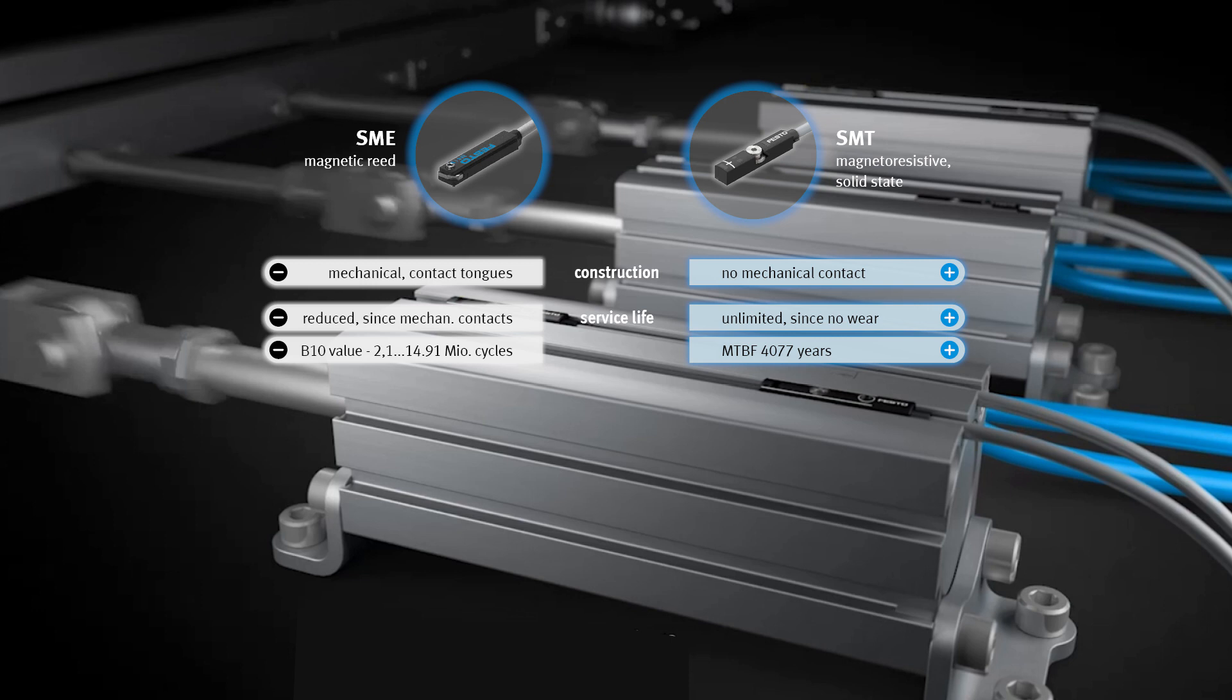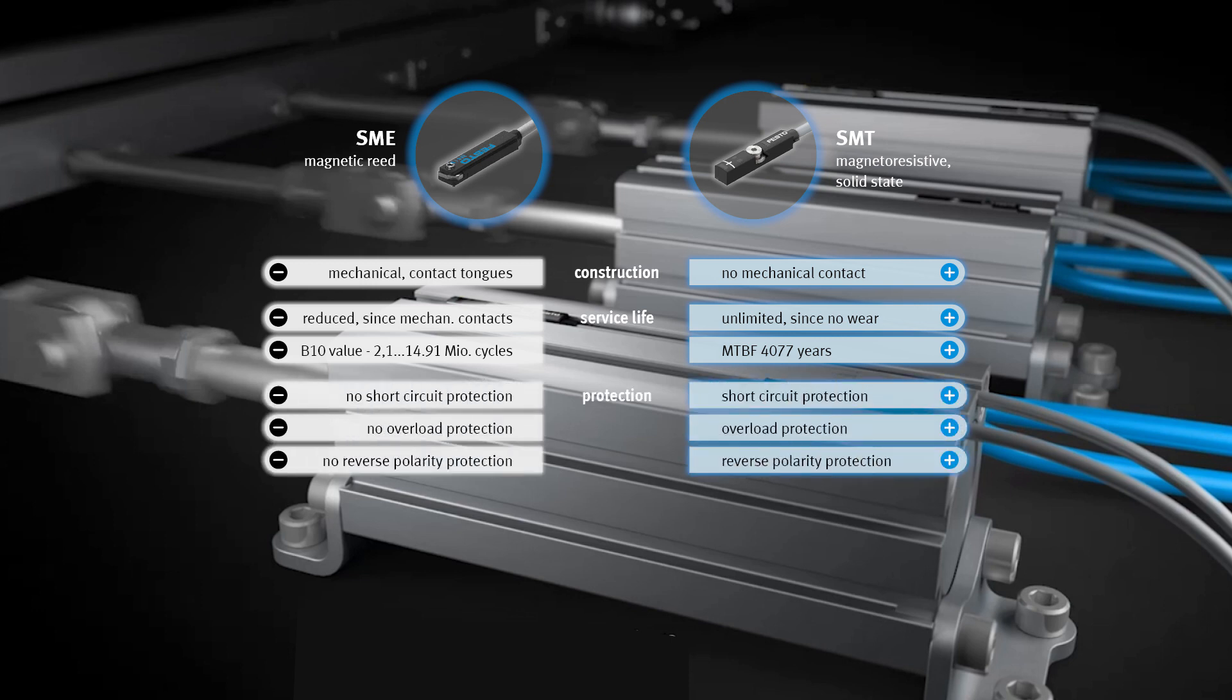The two sensors also differ in the area of protective functions. The SME offers no protection against short circuit, overload, or reverse polarity. In the SMT, the entire circuit is built with semiconductor components. This provides protection against short circuit, overload, and reverse polarity.